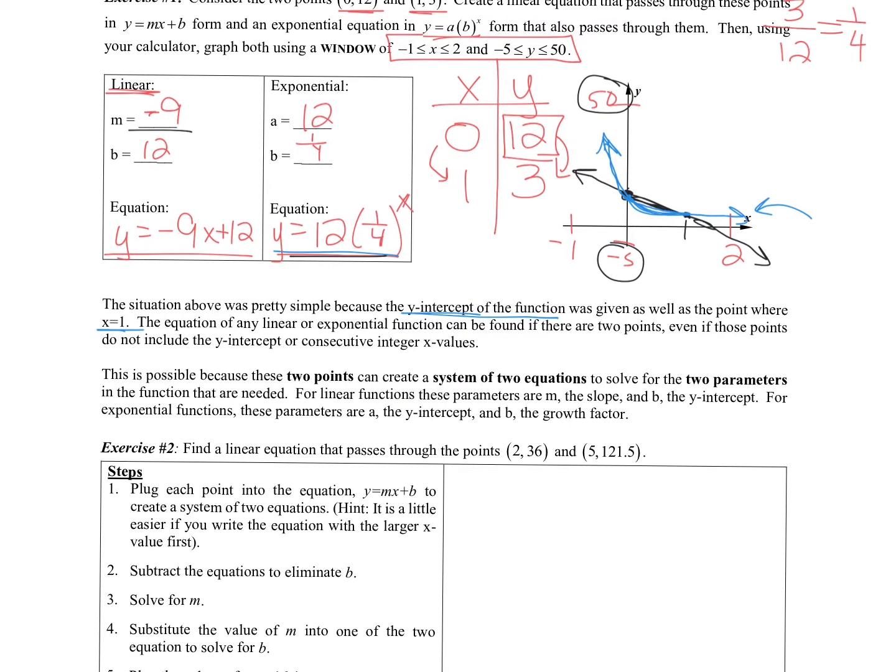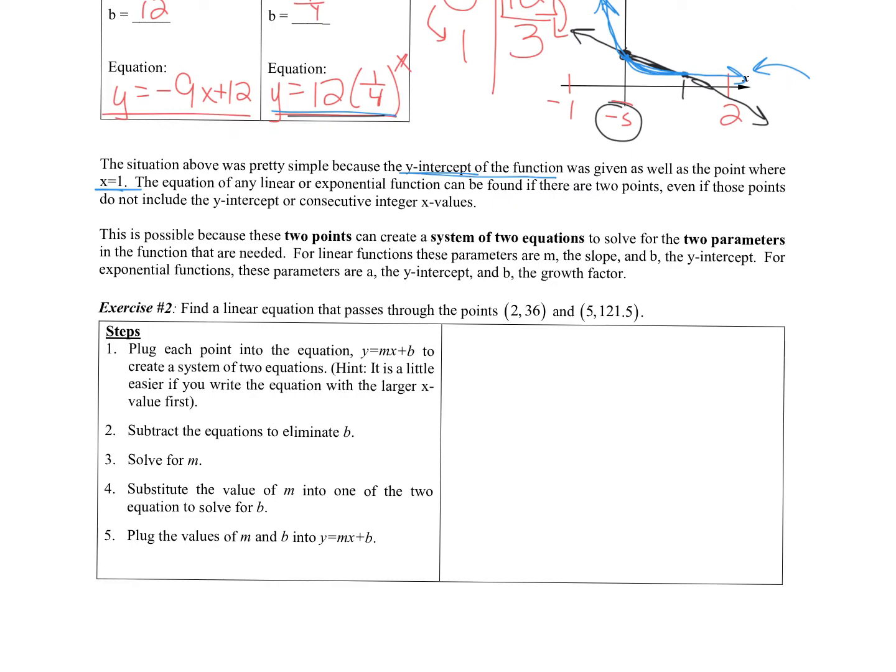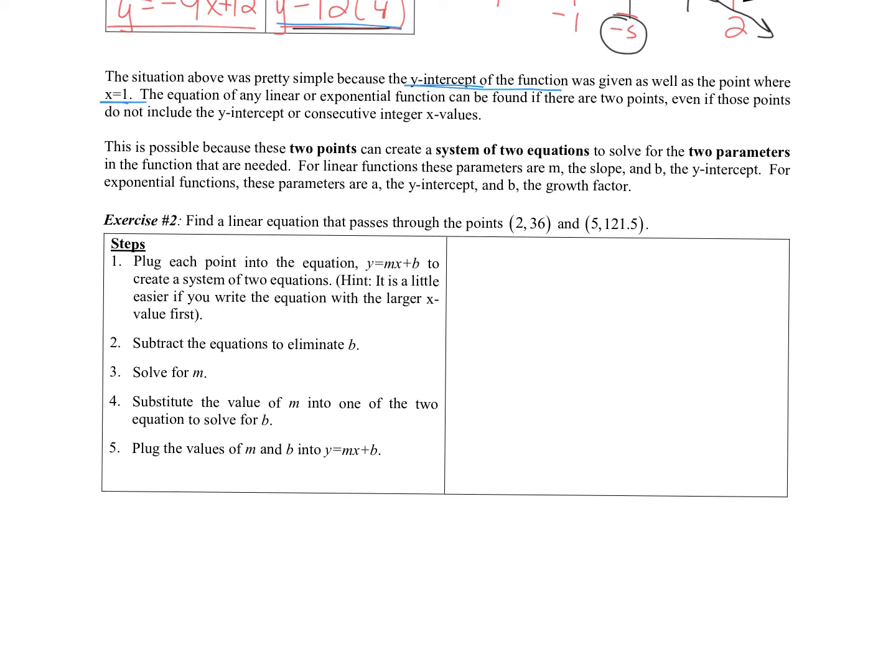So let's look at the next one where the points are not right in a row. We're going to do linear first. Now in ninth grade you learned a little different method for this. We're going to use systems because systems work for everything. There is a way to find the slope, plug that in to find the y-intercept. We're going to use a system method for this. So let's just write this out as a table to talk about why this one's different. So this time I have (2,36) and (5,121.5). So the first issue is I don't have my y-intercept so I can't say b is this number right away and I'm not making a jump by one. We're going to use a system. So we're going to plug each point into the equation y equals mx plus b to create a system of two equations. It's a little easier if you write the equation with the larger x value first.